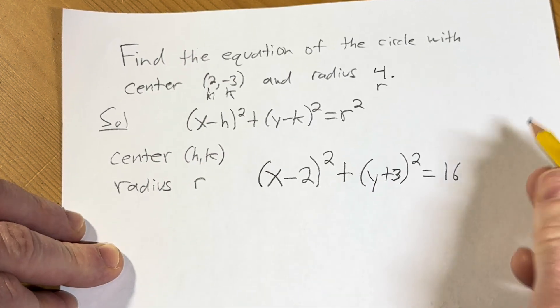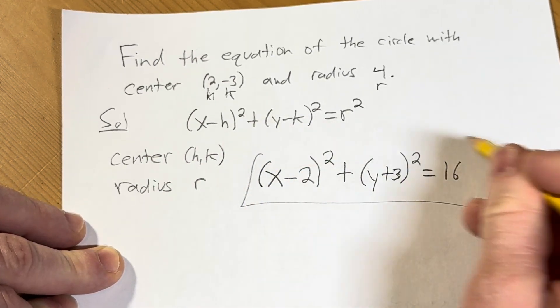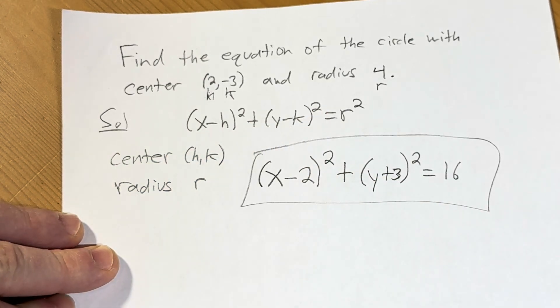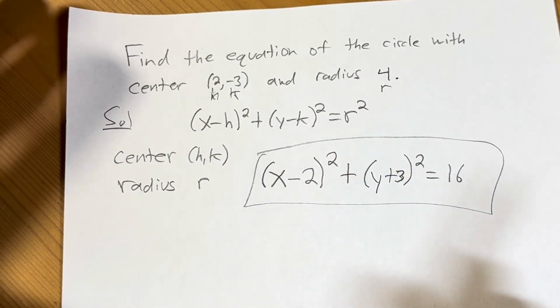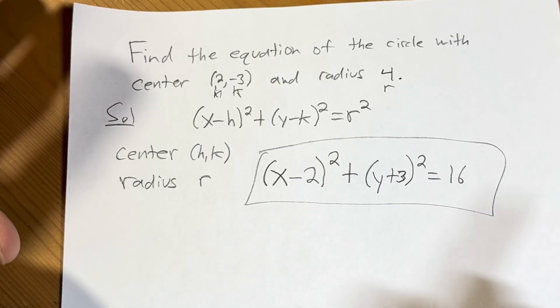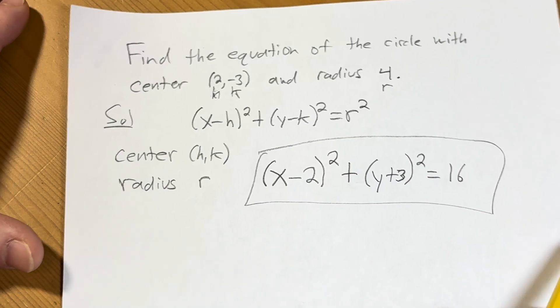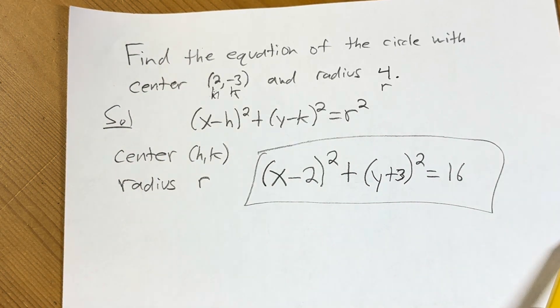And that my friends would be the equation of the circle with center (2, -3) and radius 4. That's how you do that. Hopefully this has been helpful and you've learned some mathematics. Until next time, keep doing math.